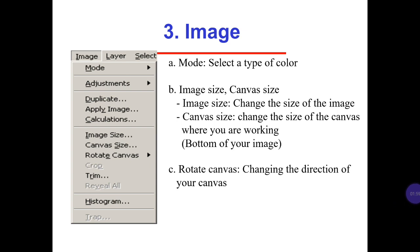Number 3 is Image. A: Mode — select a type of color. B: Image Size and Canvas Size. Image Size changes the size of the image, and Canvas Size changes the size of the canvas where you are working, at the bottom of your image. C: Rotate Canvas — changing the direction of your canvas.